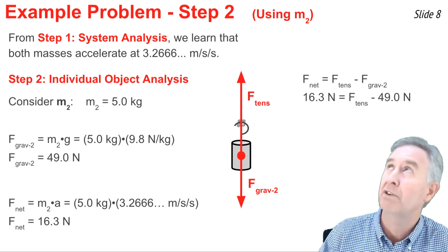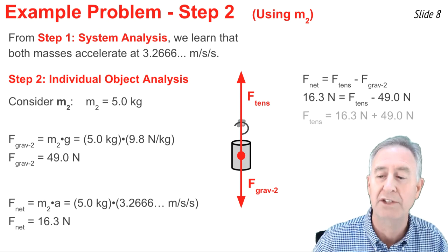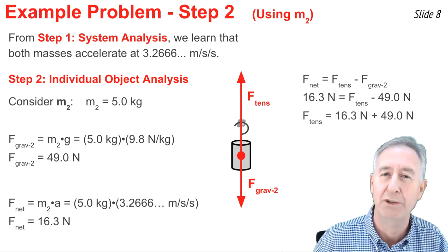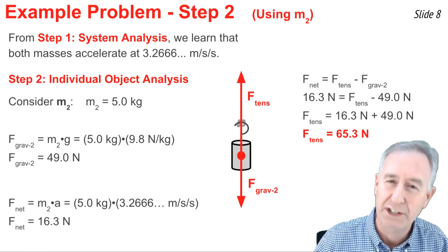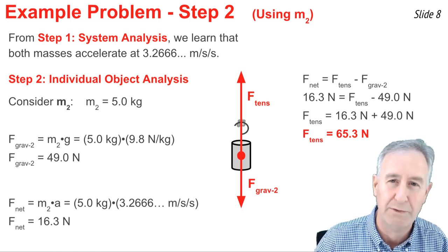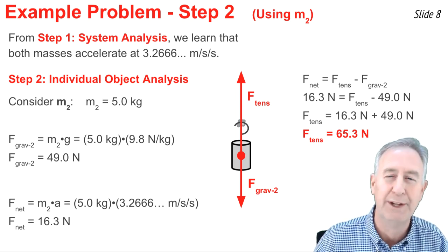Now to solve this equation for F tension, I have to add 49.0 newtons to both sides. I end up with this. When I pull out my calculator and do the math, wouldn't you know, I get the same force I got before, 65.3 newtons for the tension force. It doesn't matter what object you pick to do the individual object analysis.